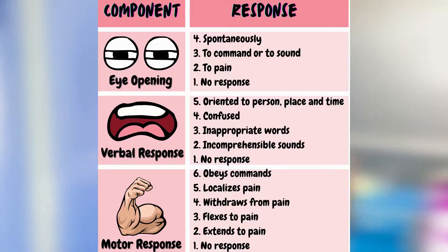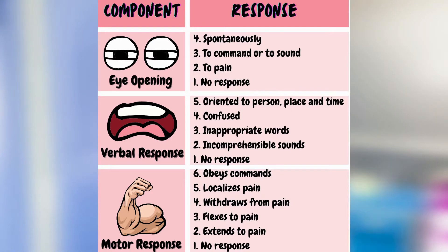To be able to assess the GCS, you need to know and familiarize yourself with all the components and how they are graded. Looking at the picture, we can see that the first component is the eye response, graded from 1 to 4. 4 being the highest, meaning the patient opens their eyes spontaneously. 3 meaning the patient opens their eyes in response to verbal command. 2 meaning the patient opens their eyes in response to pain. And 1, the lowest, meaning no eye opening at all.